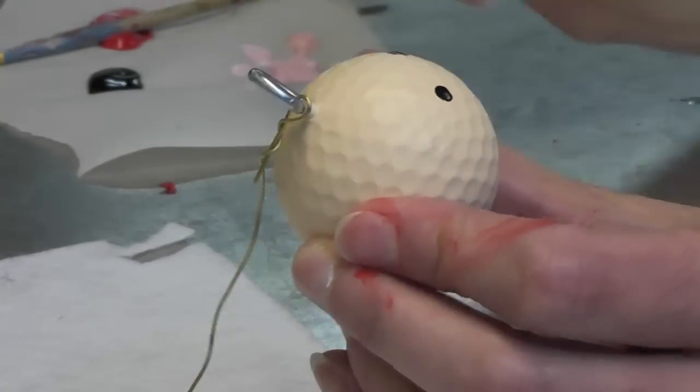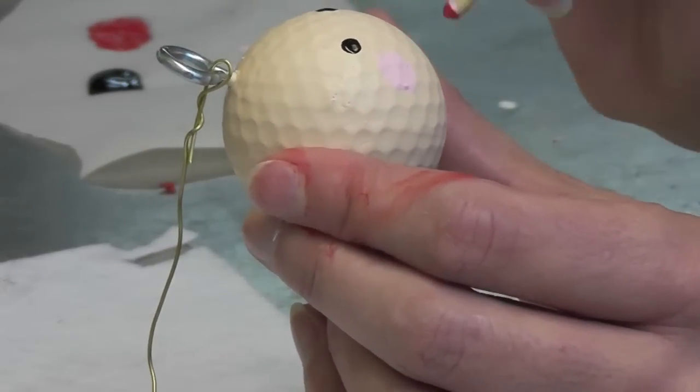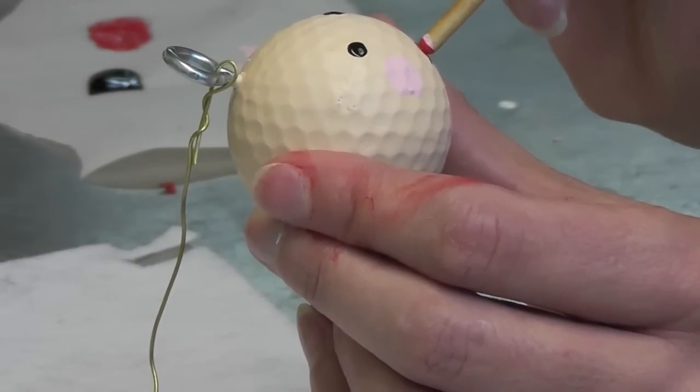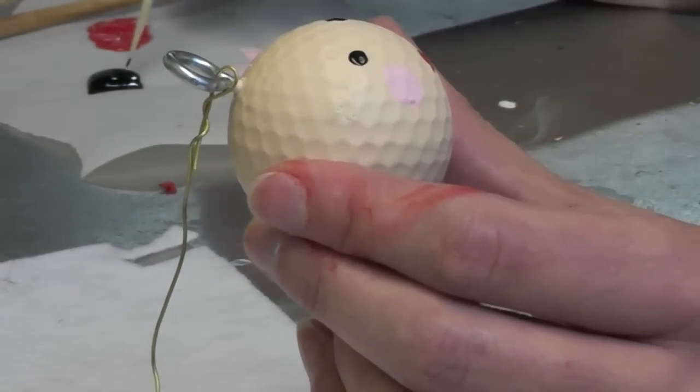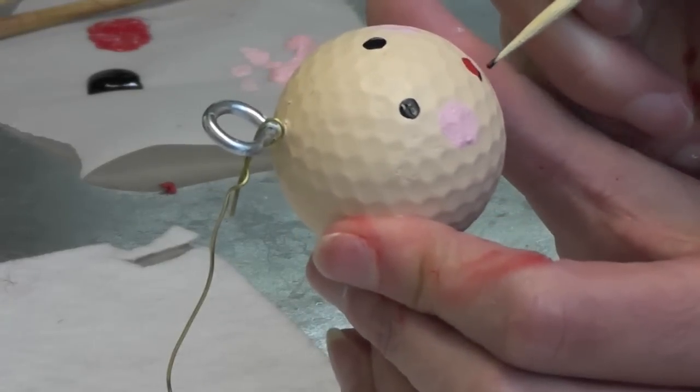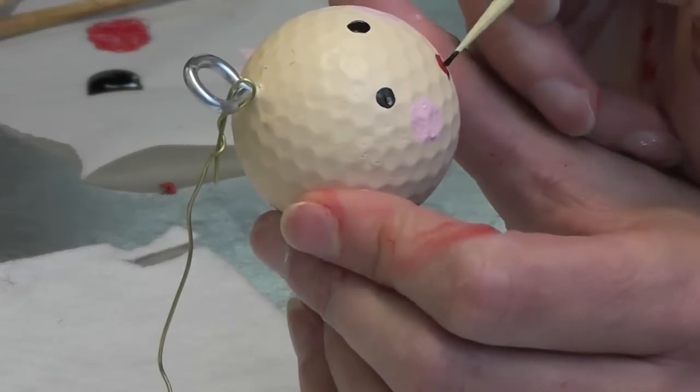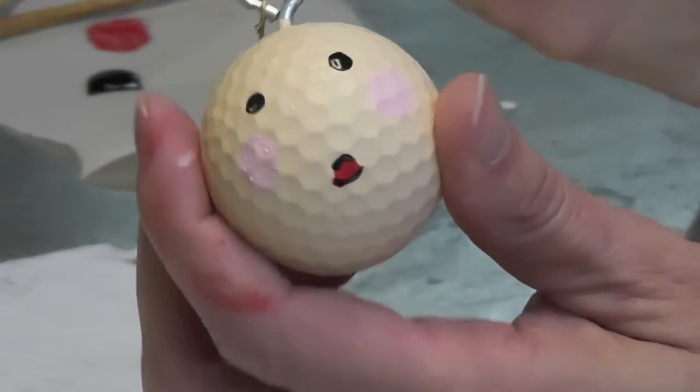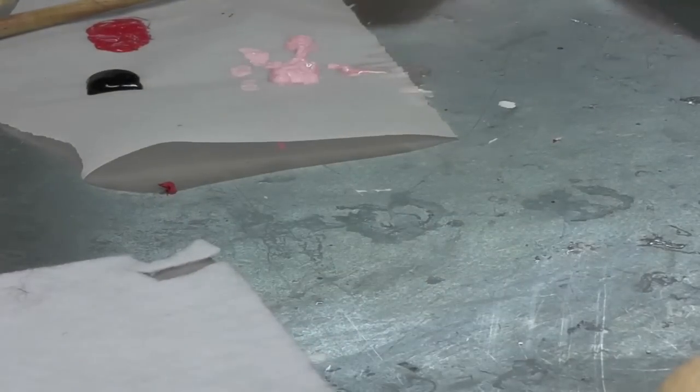Then we want to give him a mouth. I think I'll give him a red mouth and then put a little black accent on it, a little bit on the top and a little bit on the bottom. And that's Santa, so we're going to let that dry.